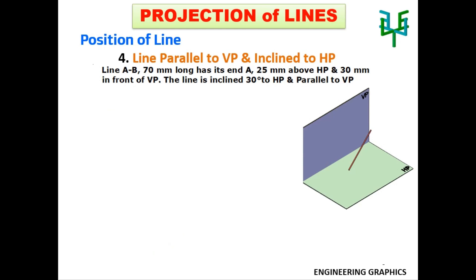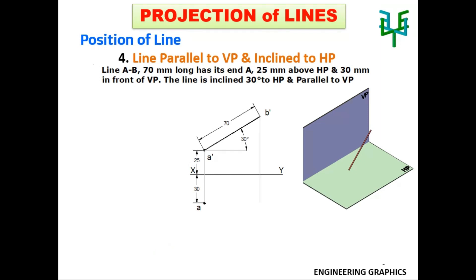After drawing the XY line, draw projections of end point A. Point A is 25mm above HP, so the elevation of the point is 25mm above the XY line — it is A-dash. From A-dash, draw a 30-degree line. The length of this line is the true length, that is 70mm. The other end point is B-dash. Draw a projector from A-dash and mark plan of point A 30mm below the XY line. Draw projectors from B-dash also, then draw a horizontal line from A up to the projector from B-dash — this is B. Since the line is parallel to VP, plan AB is parallel to the XY line.